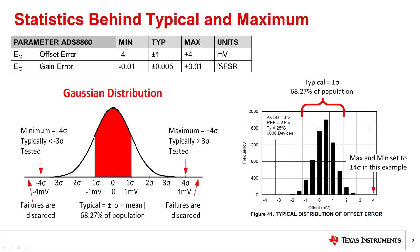This slide shows the statistical background behind the typical and maximum specifications in a datasheet. For a zero-centered specification, the typical value is the absolute value of one standard deviation plus the mean of the distribution. Often, the mean value is near zero, so for the purposes of this discussion, we will assume that the mean is zero. In this example, the typical offset is plus or minus 1 millivolt, which corresponds to plus or minus 1 standard deviation.